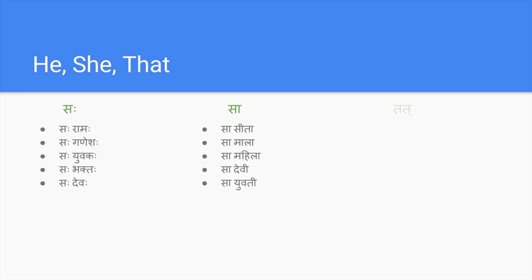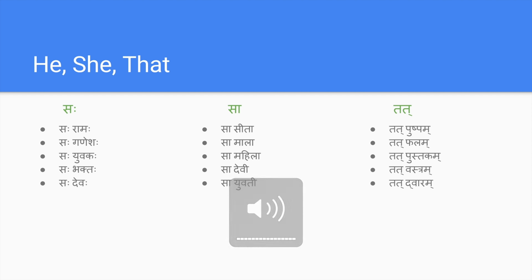An important thing to understand about saha and sa is the contrast with English. In English, we use 'he' and 'she' for all living beings - he is Ram, he is God, she is a girl, she is Sita. For non-living beings, we mostly use 'that' - that is a book, that is a pen, that is a flower, that is a door, that is a temple.